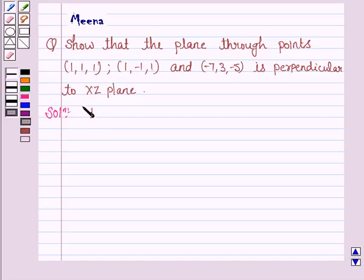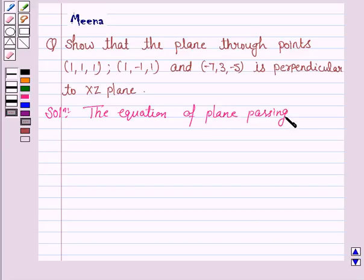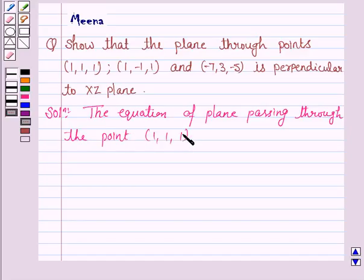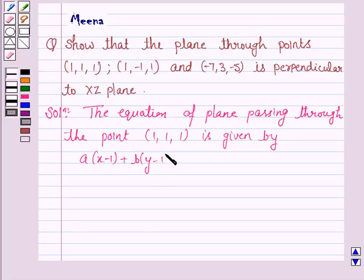Now the equation of the plane passing through the point (1, 1, 1) is given by a(x − 1) + b(y − 1) + c(z − 1) = 0. Let us name this as equation 1.